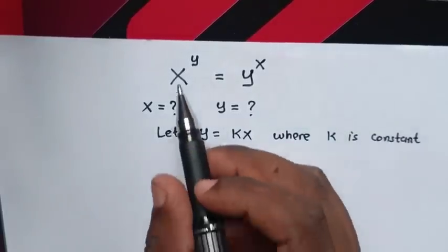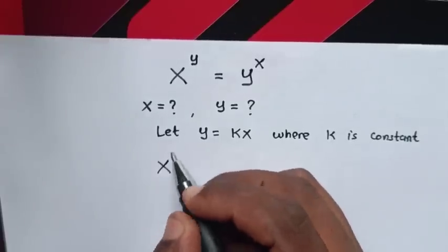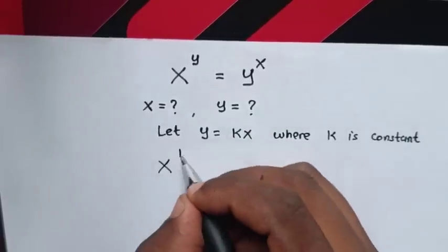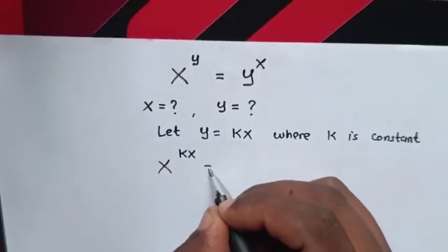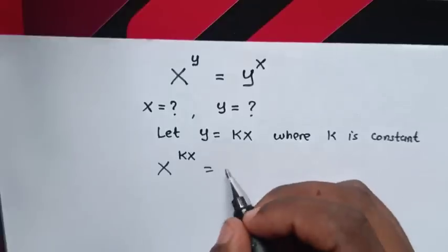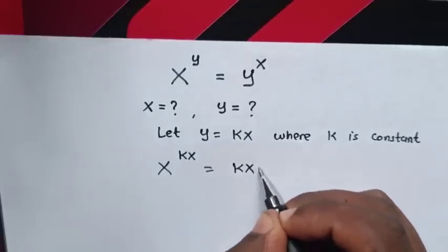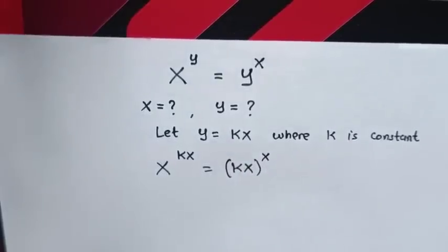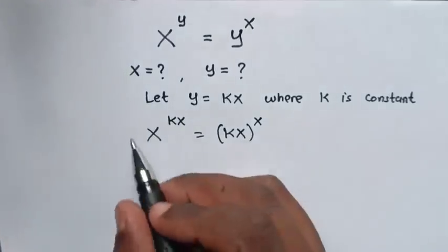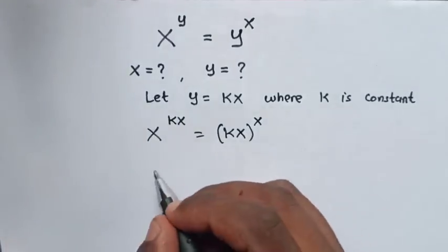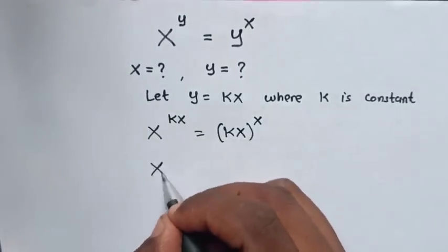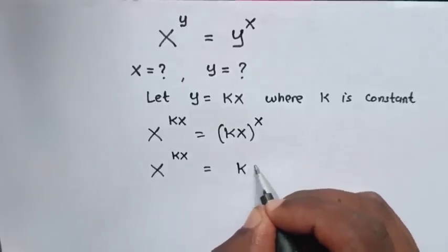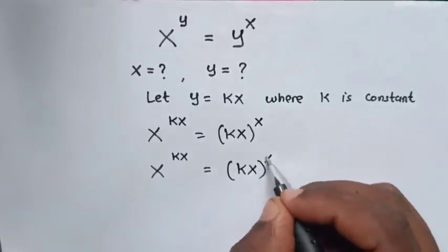So our equation will be x^(kx) = (kx)^x.